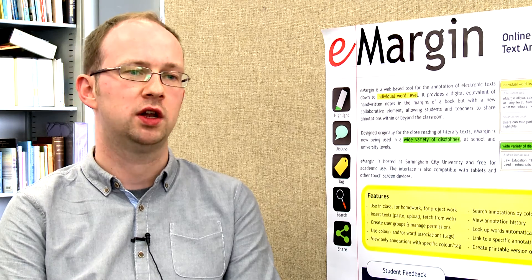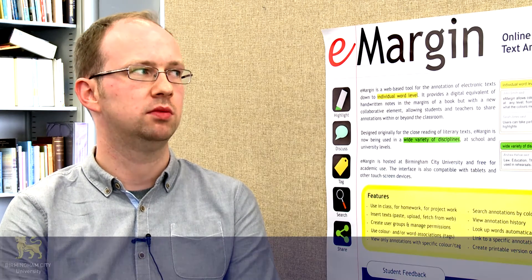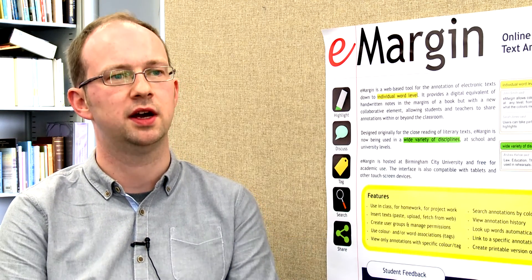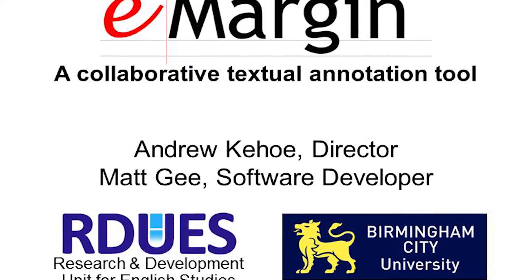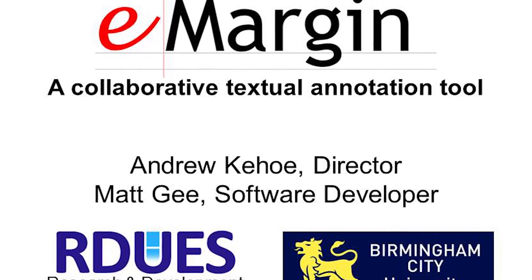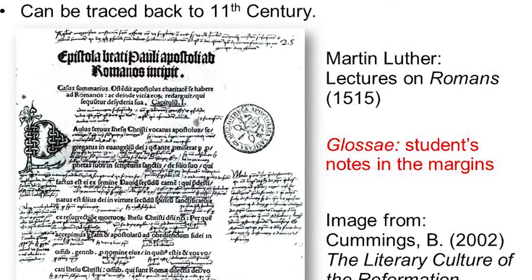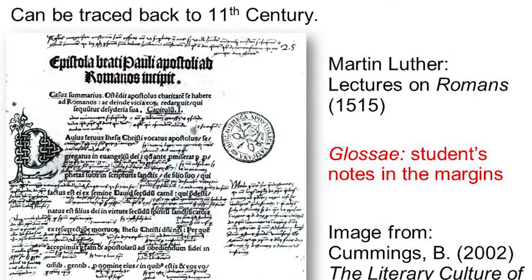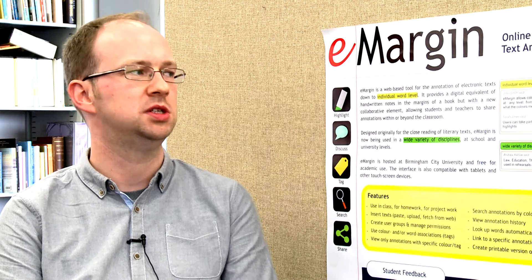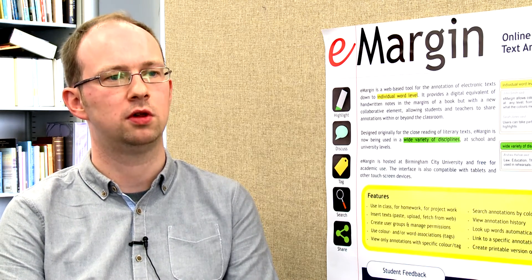One particular project that I've been working on recently is called eMargin, which is a collaborative text annotation tool. It's more of an applied project, but it builds on our previous research on text processing and analysis. Basically, eMargin is an online collaborative annotation tool for electronic texts. It's designed to be an electronic equivalent of the kind of notes that you'd scribble in the margins if you were reading a conventional printed text. You might gradually highlight or underline important themes or passages of the text and try and draw them together into some kind of overall analysis.